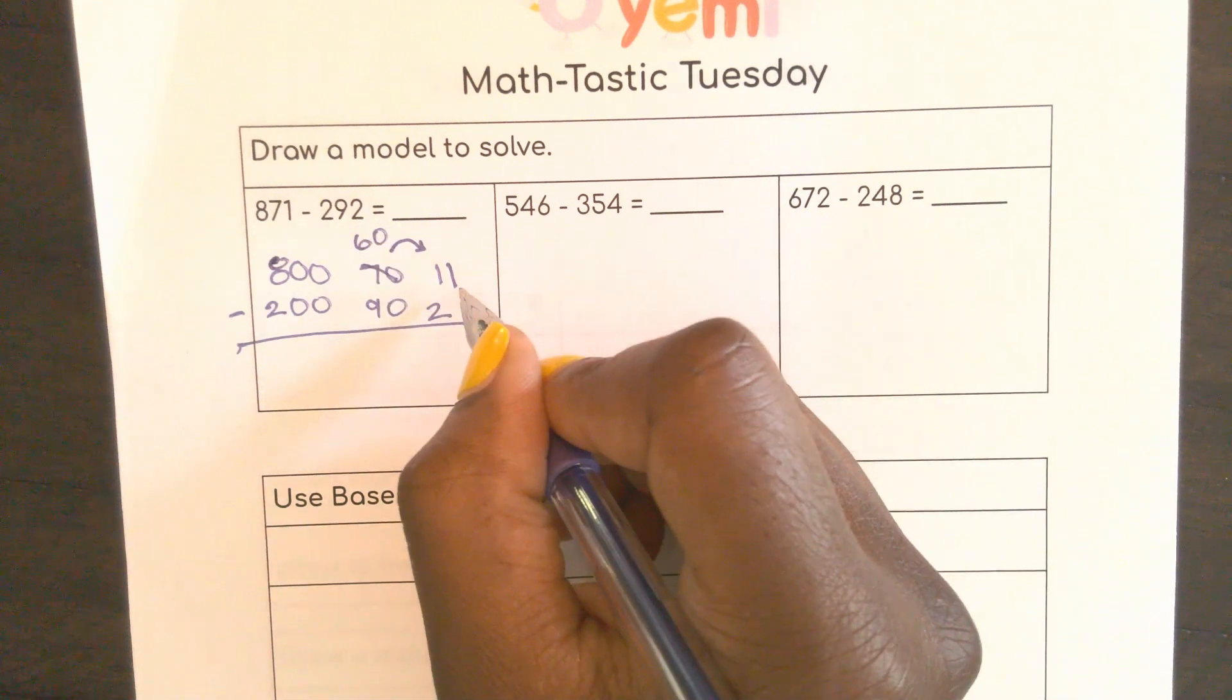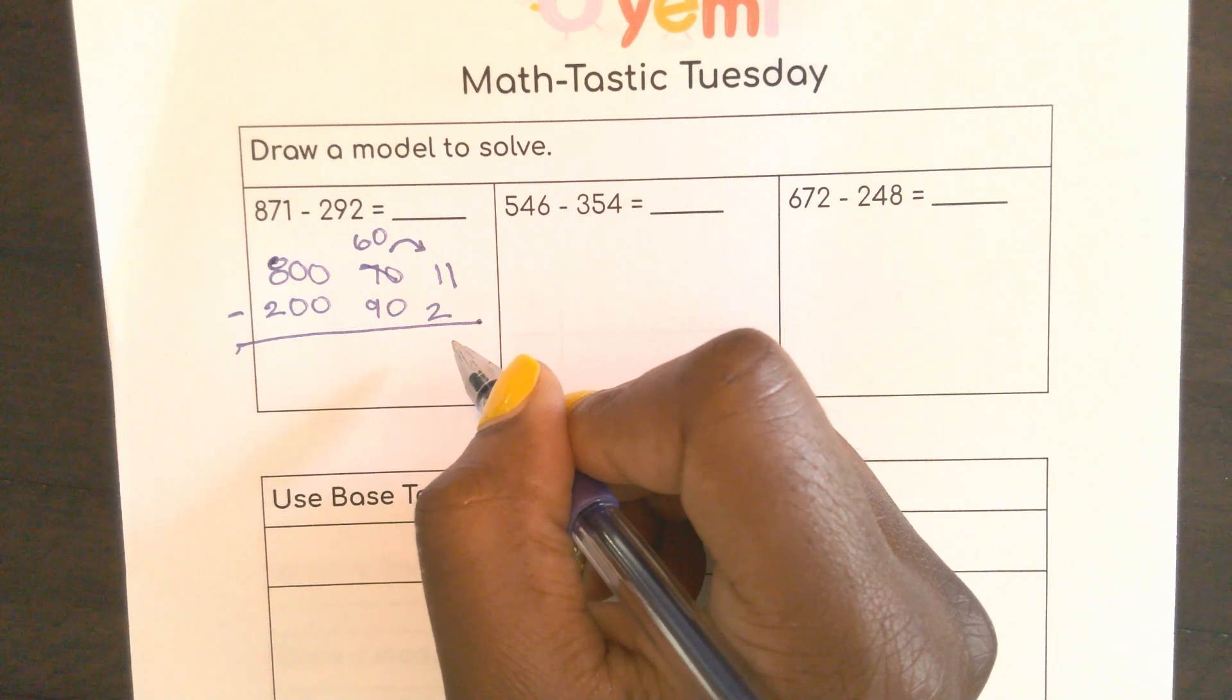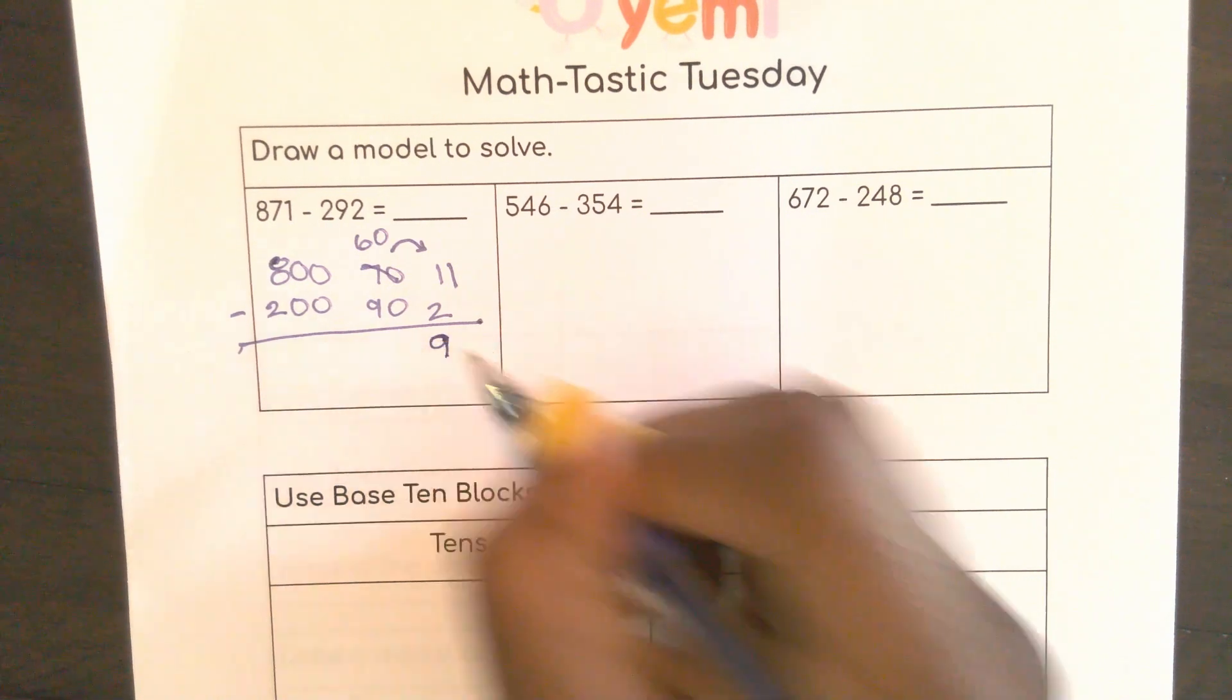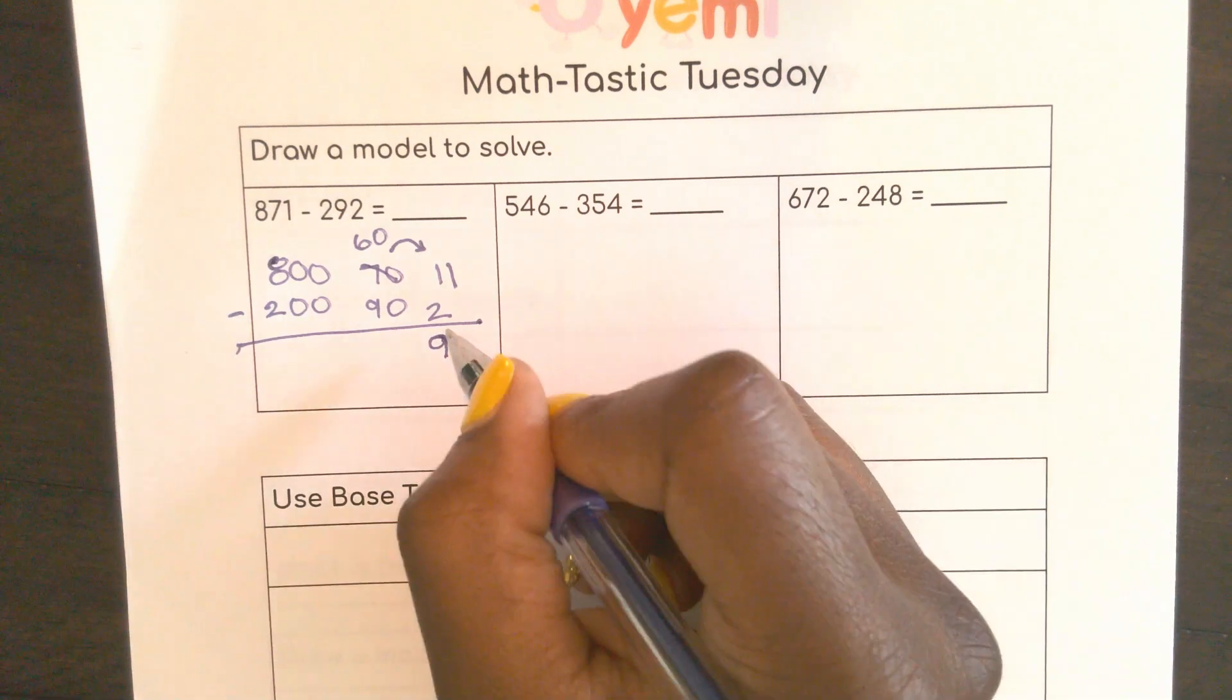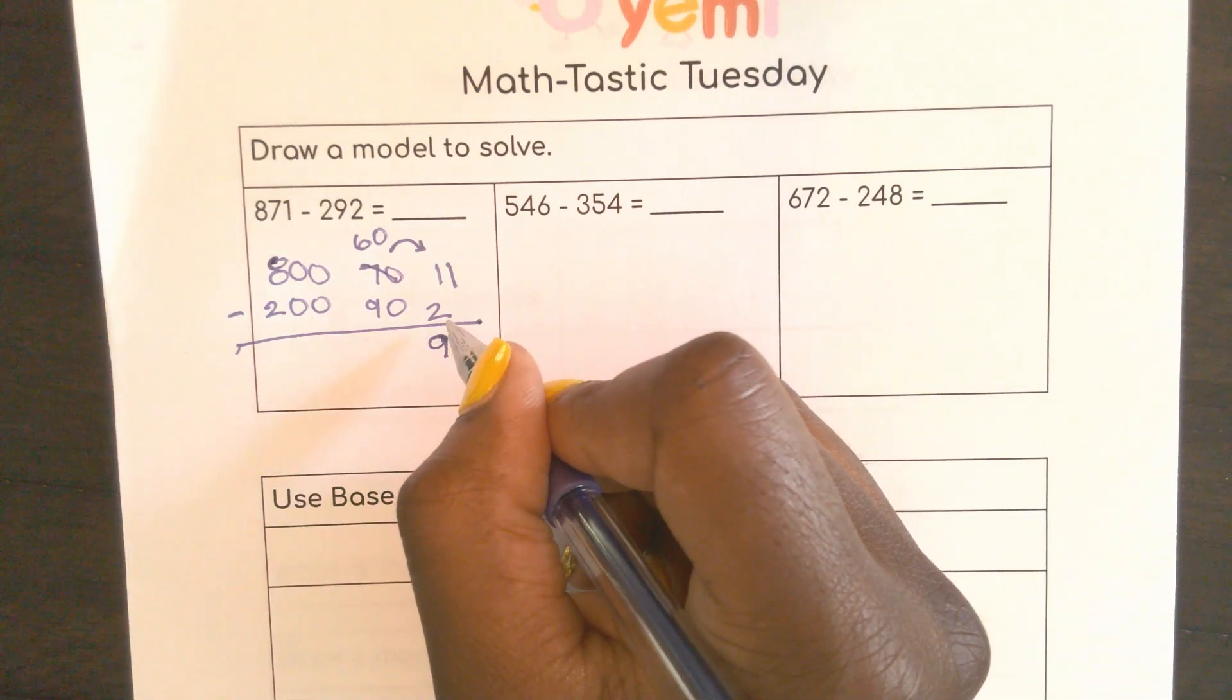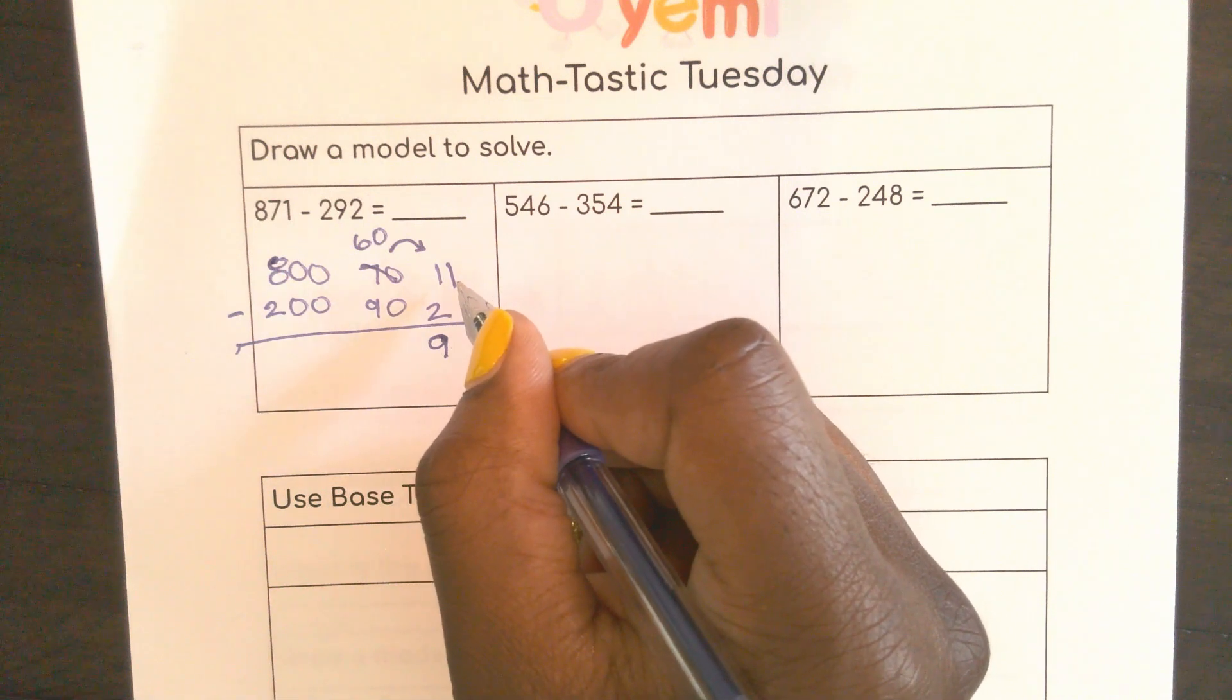So 11 minus 2. Let's see, 8, 1, 9. I'm always making 10 to help me so I knew I needed 8. If I have 2, I need 8 to get to 10 and I needed one more to get to 11. So that 8 and 1 gave me 9.